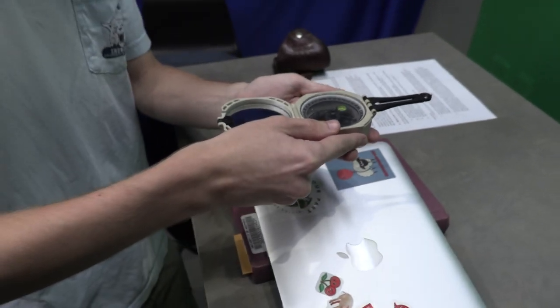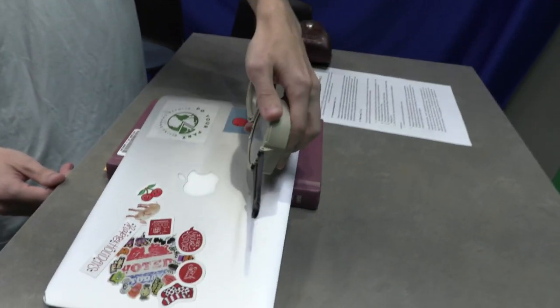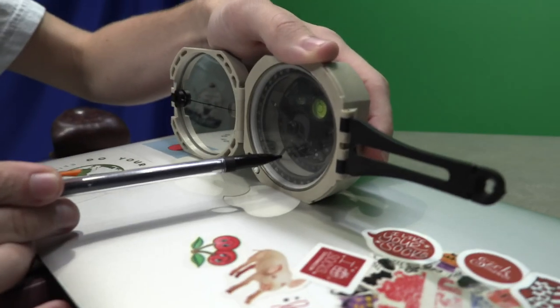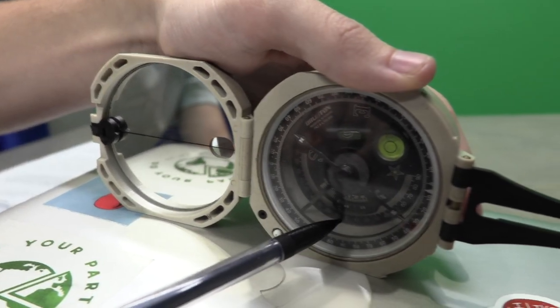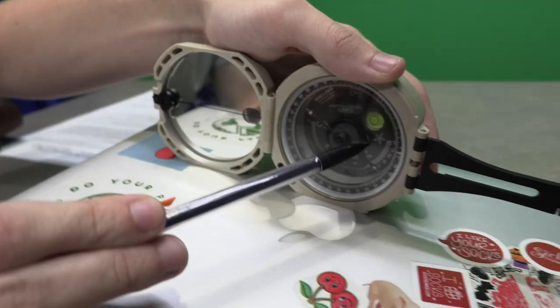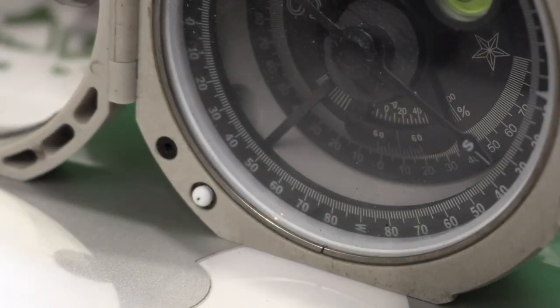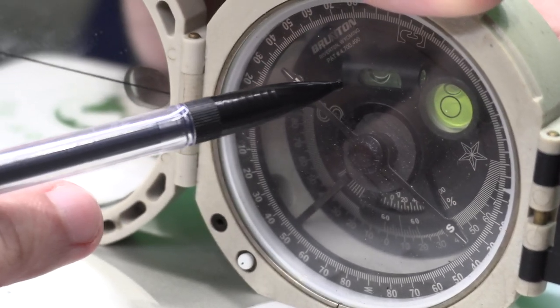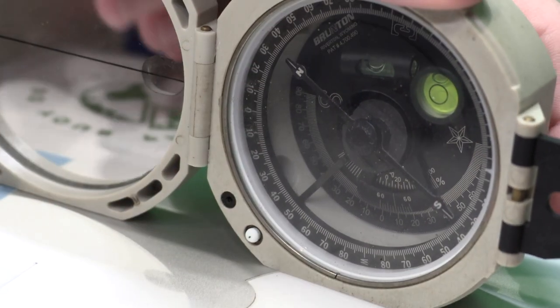So once you find that direction, what you do to find the dip is you take the compass, place it on the side like so. What you'll be looking at is this little 60-60 mark here and where it meets this half circle line on the bottom. So the way you can tell that you have found this is if this bubble in here is in between the two lines, maybe a little difficult to see.